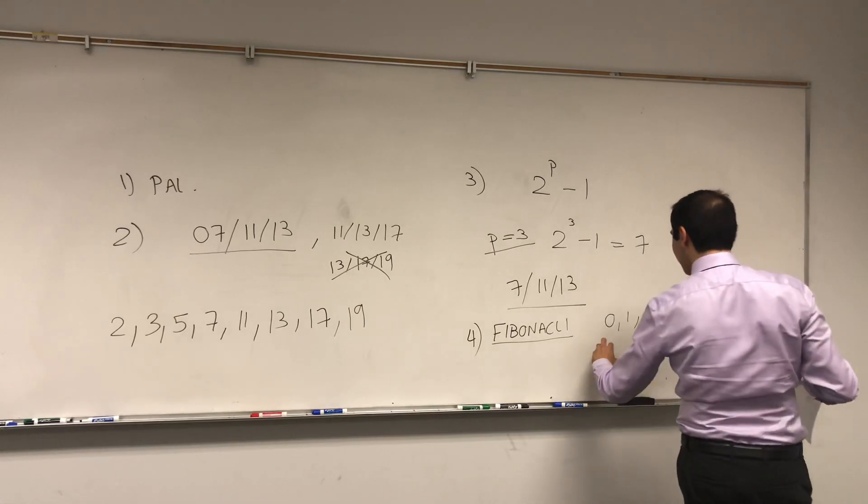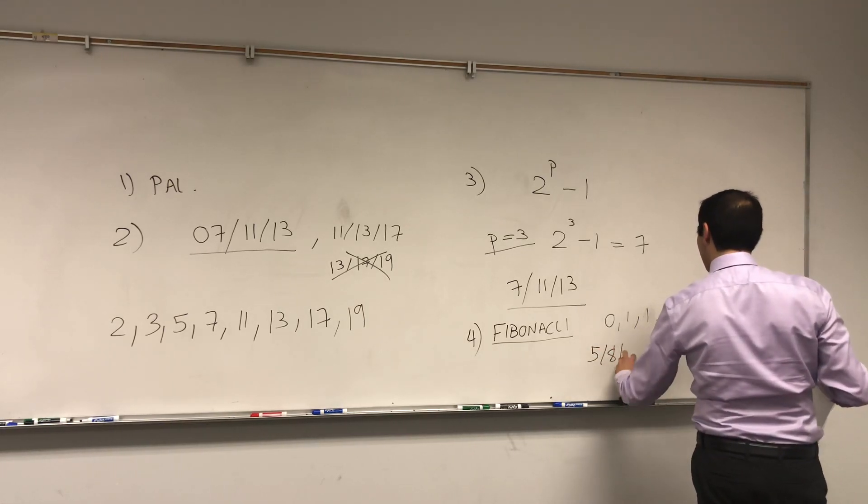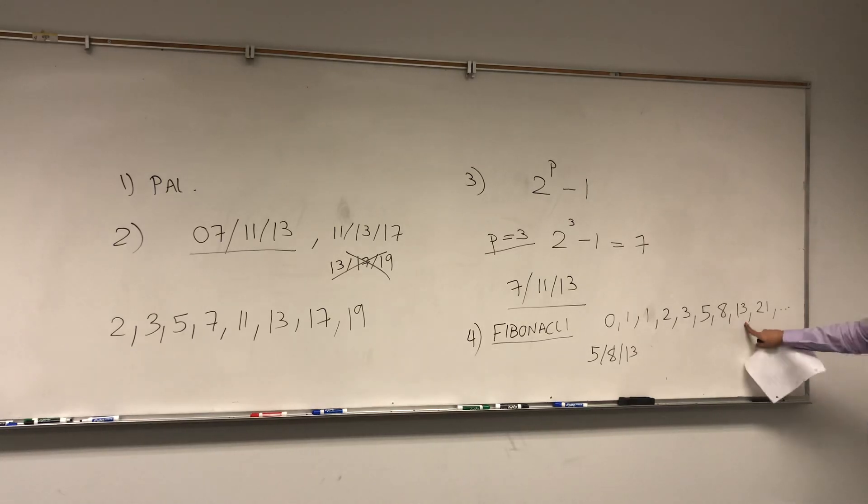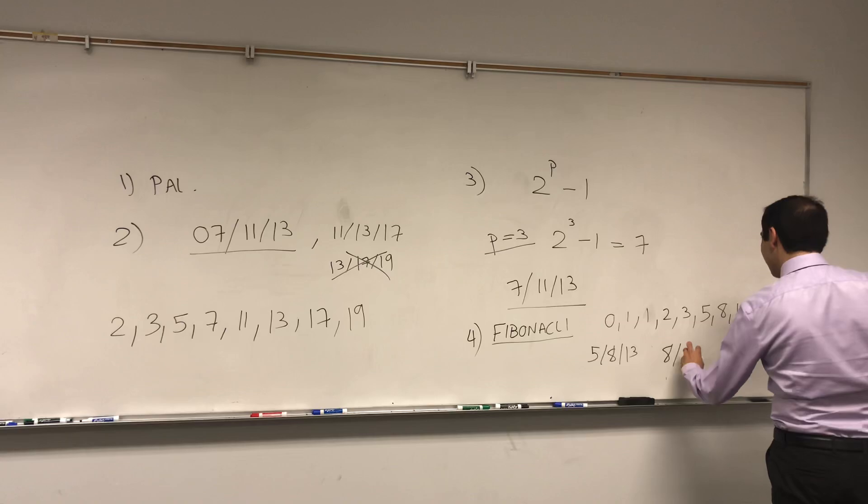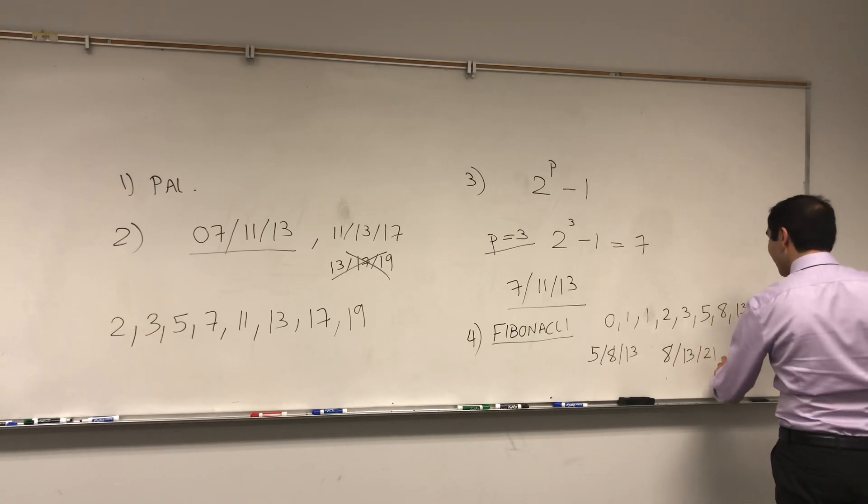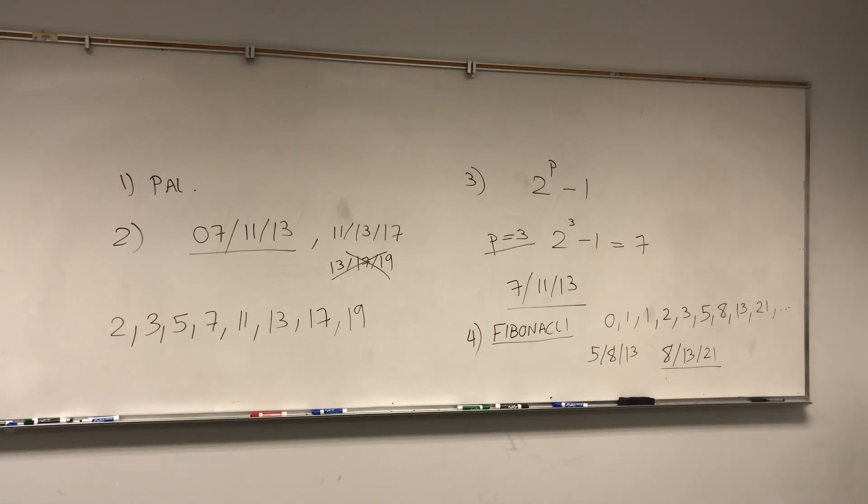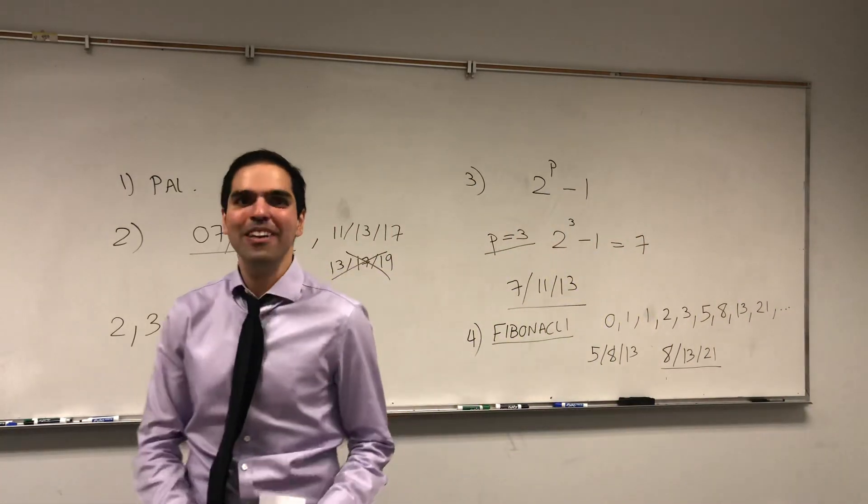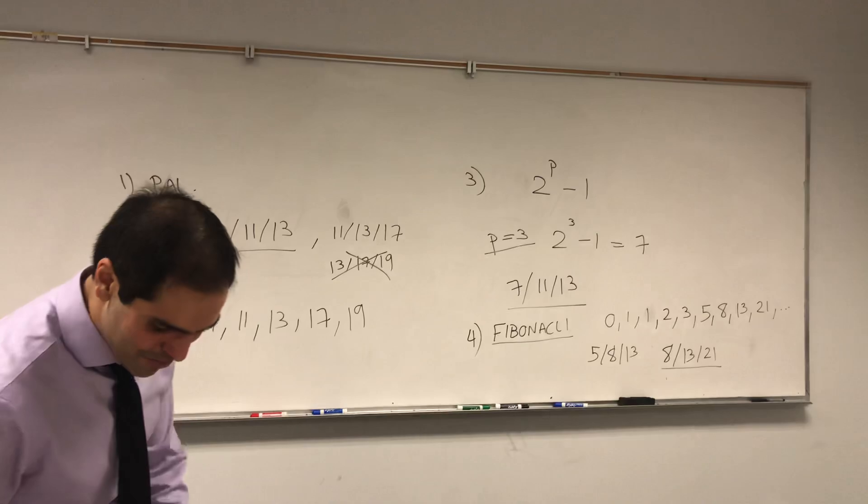So for instance, 5, 8, 13 was a Fibonacci date. But now, the next one is coming up next year, 8, 13, 21 is a Fibonacci date. Okay. And unfortunately, that's all of them because then the 13th month does not exist yet. Maybe in a couple of centuries or something.